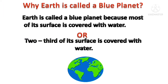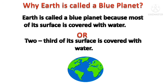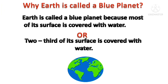Quiz question: Why is earth called a blue planet? Earth is called a blue planet because most of its surface — two-thirds of its surface — is covered with water.